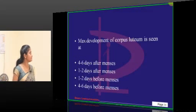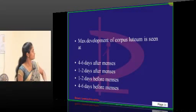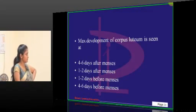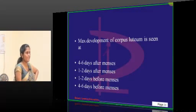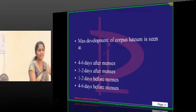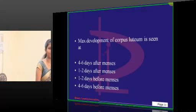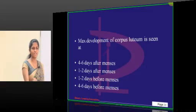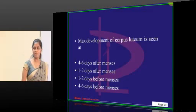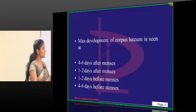Next: maximum development of corpus luteum is seen at when? When is the corpus luteum getting ruptured? They are asking in an indirect way. Once the corpus luteum ruptures it releases maximum progesterone. The progesterone is released on day 24, which is four to six days before menstruation. They are asking in an indirect way — just use your brain.